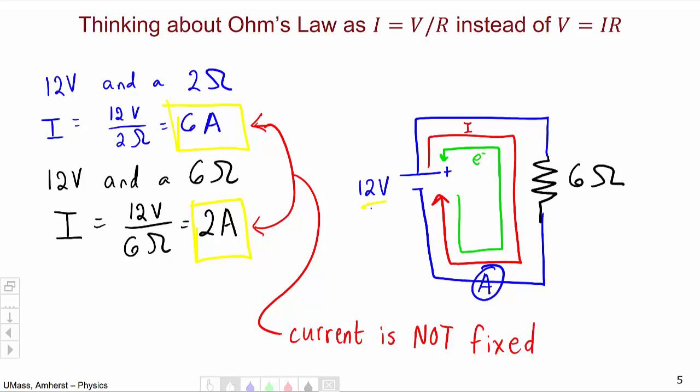What is fixed is the potential difference. The potential difference of the battery is always 12 volts and the current coming out of the battery depends on how big of a resistor we have.